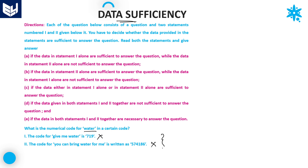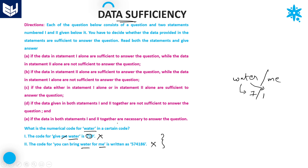Therefore, you have to combine statement 1 as well as statement 2. If you combine both statements, there are some common words and common numbers. The common words are 'me' and 'water', and the common numbers are 7 and 1. So water and me are coded as either 7 or 1, but we cannot say exactly which number represents water, even after combining both statements together.